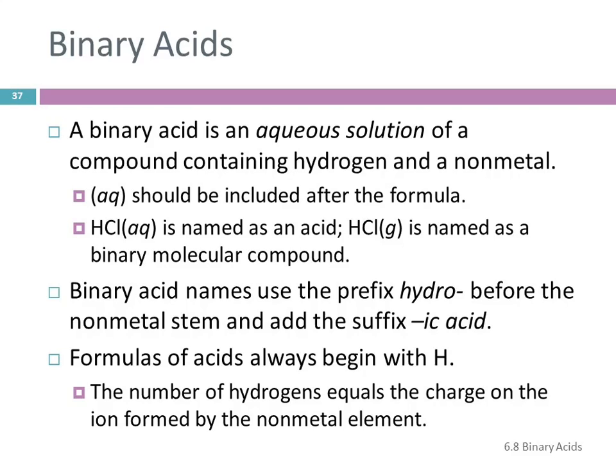A binary acid is an aqueous solution of a compound containing hydrogen and a non-metal. Aqueous solution means the compound is dissolved in water. There are many ways to define what an acid is, but probably the most general is it's a compound that when you dissolve it in water, it produces hydrogen ions.